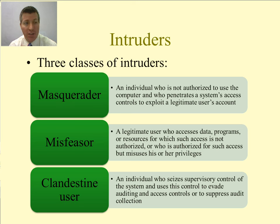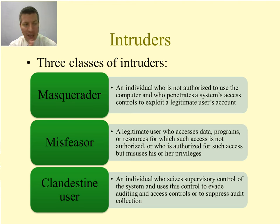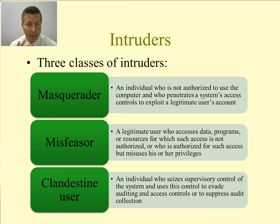Intruders are often called hackers, and there are three different classes of intruders. The first one is a masquerader, an individual who is not authorized to use the computer and penetrates a system's access controls to exploit a legitimate user's account. A misfeasor is a legitimate user who accesses data, programs, or resources for which access is not authorized, or who is authorized but misuses his or her privileges. And then the clandestine user is an individual who seizes supervisory control of the system and uses this control to evade auditing and access controls or suppress audit collection.